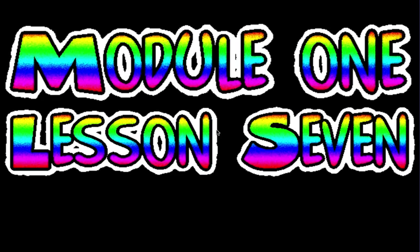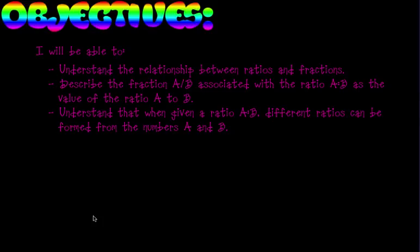Welcome to Module 1, Lesson 7: Associated Ratios and the Value of a Ratio. Today we're going to talk about how to understand the relationship between ratios and fractions, how to describe the fraction A over B associated with the ratio A to B as the value of the ratio A to B, and how to understand that when given a ratio A to B, different ratios can be formed from the numbers A and B. We're talking about how to create a fraction from a ratio and how it becomes the value of that ratio, and then understanding those relationships and how to use them.